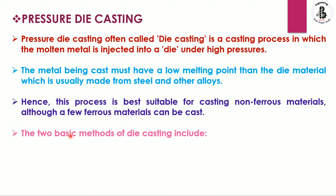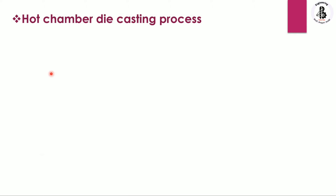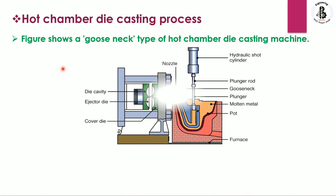The two basic methods are hot chamber die casting and cold chamber die casting process. Let us start with the first one: the hot chamber die casting process. This is the basic setup for the hot chamber die casting process. We start with the furnace, which is used to increase the temperature and make the molten form of the metal.